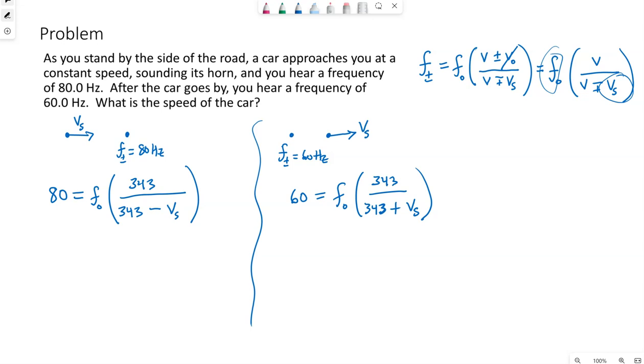So we need to do a little substitution here. We know f naught is the same. We know V of the source is the same. So let's just solve for f naught. So 80 times 343 minus V of the source over 343. This is f naught from this left-hand equation. If we put it over here in place of f naught.